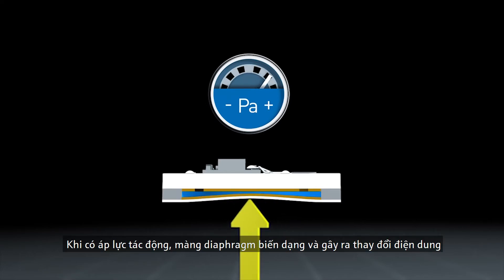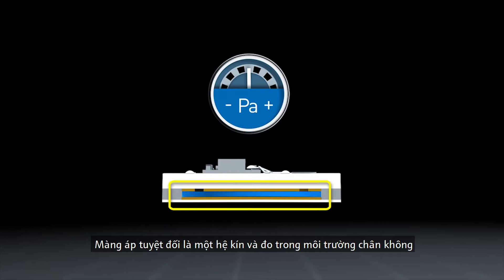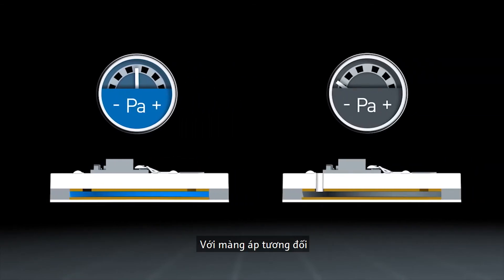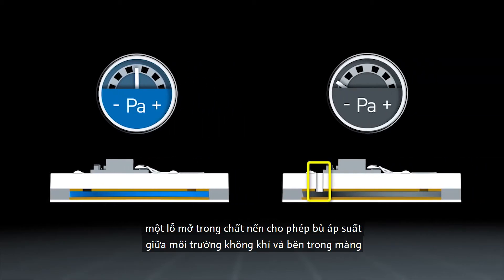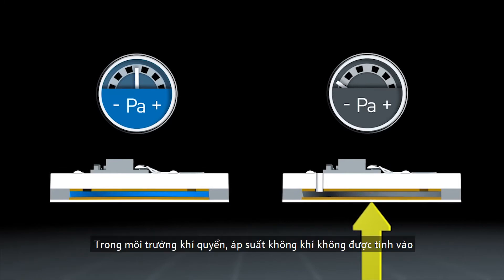As pressure is applied, the diaphragm deforms and causes a change in capacitance. The absolute pressure cell is a closed system and measures against the vacuum. In an atmospheric environment, the air pressure is indicated. In a gauge pressure cell, an opening in the substrate permits the pressure compensation between the atmospheric environment and the inside of the cell. The cell measures values which are relative to the ambient pressure. In an atmospheric environment, the air pressure is not indicated.